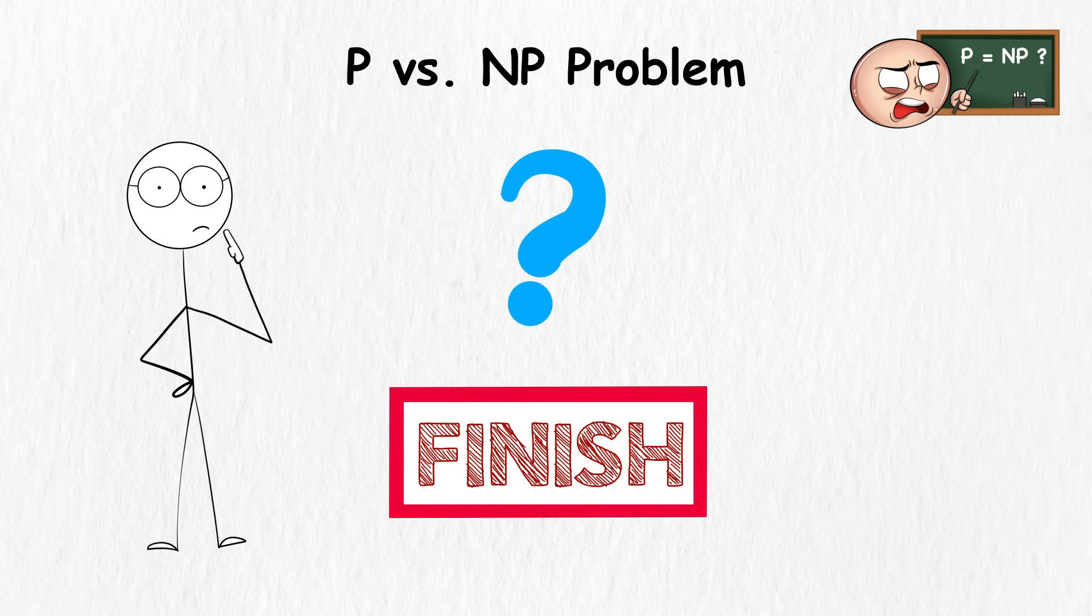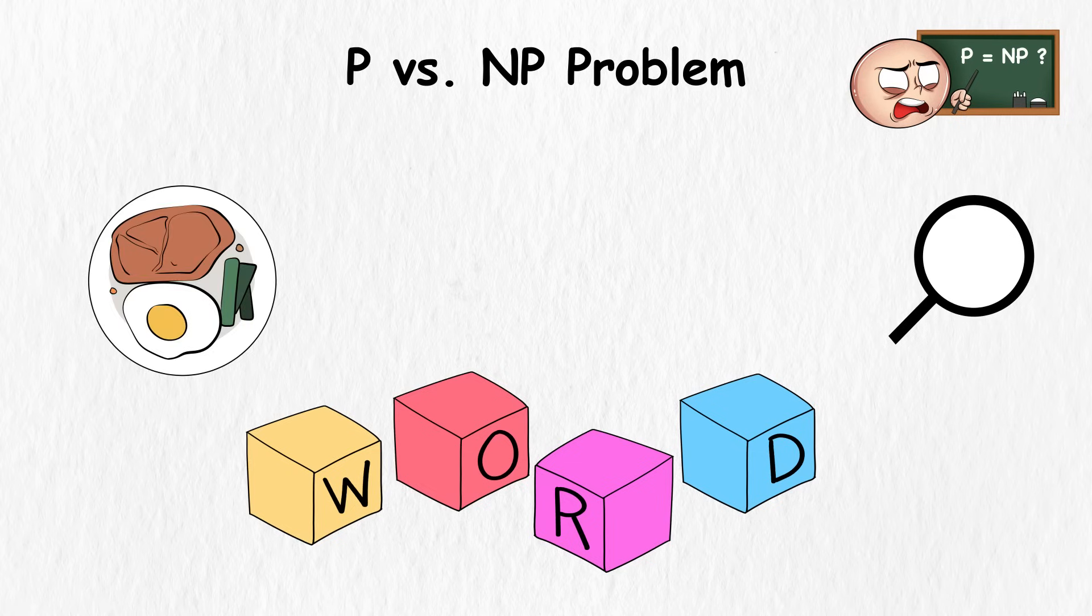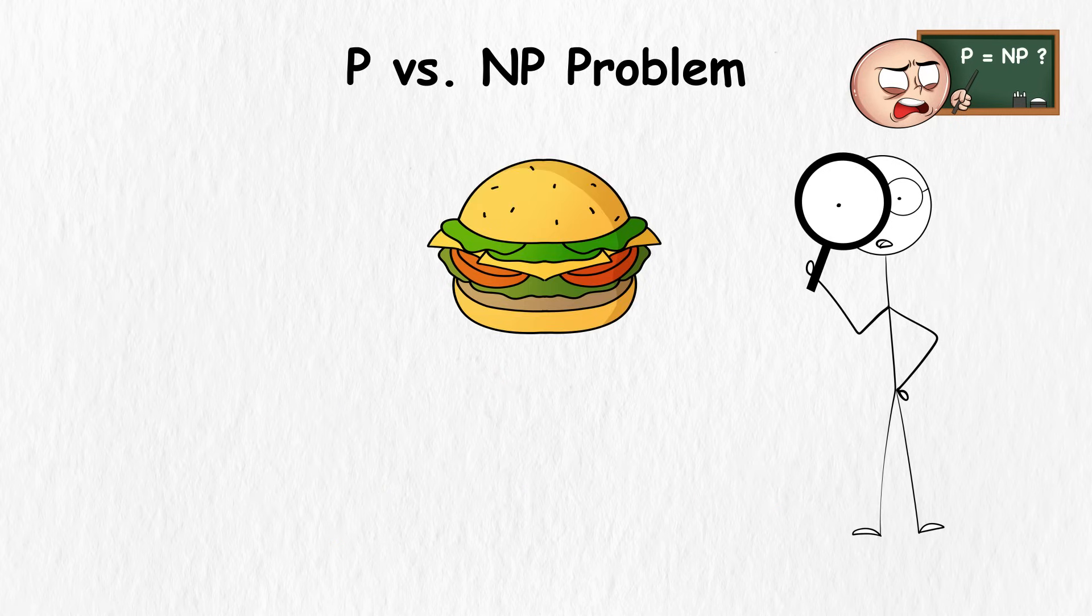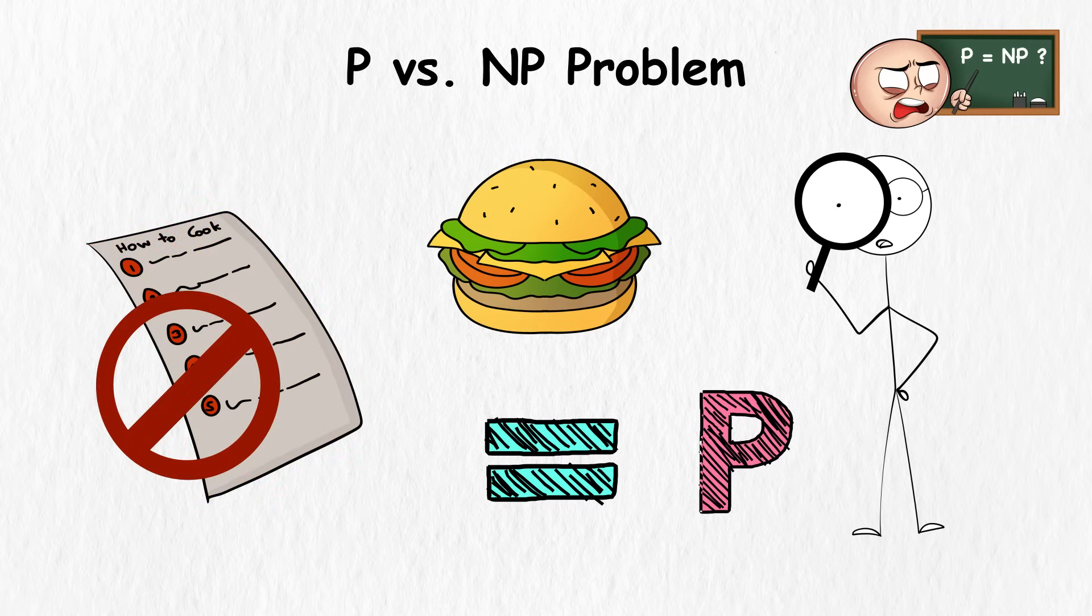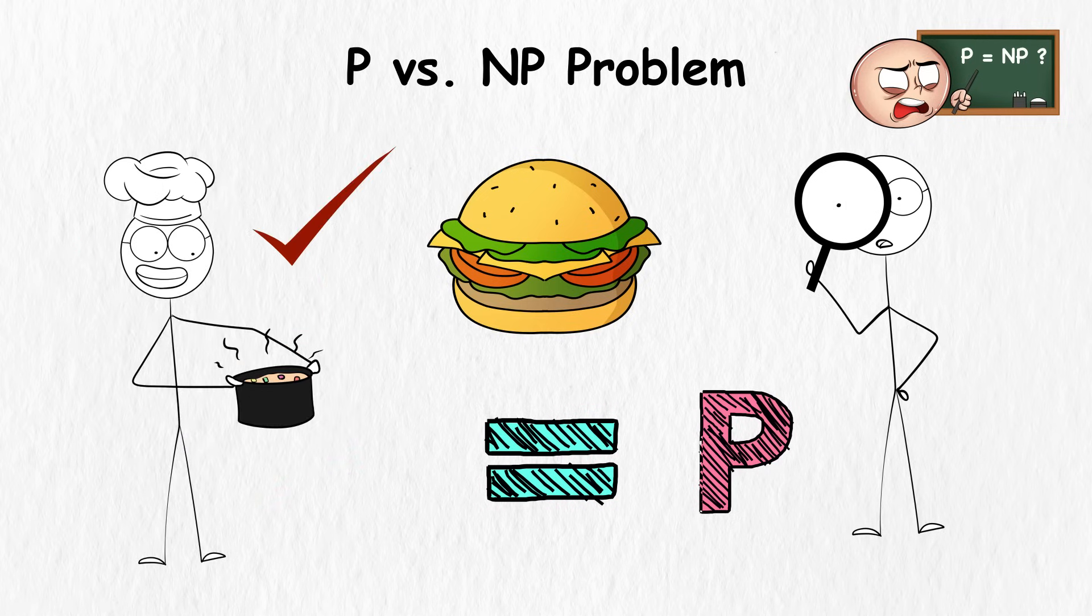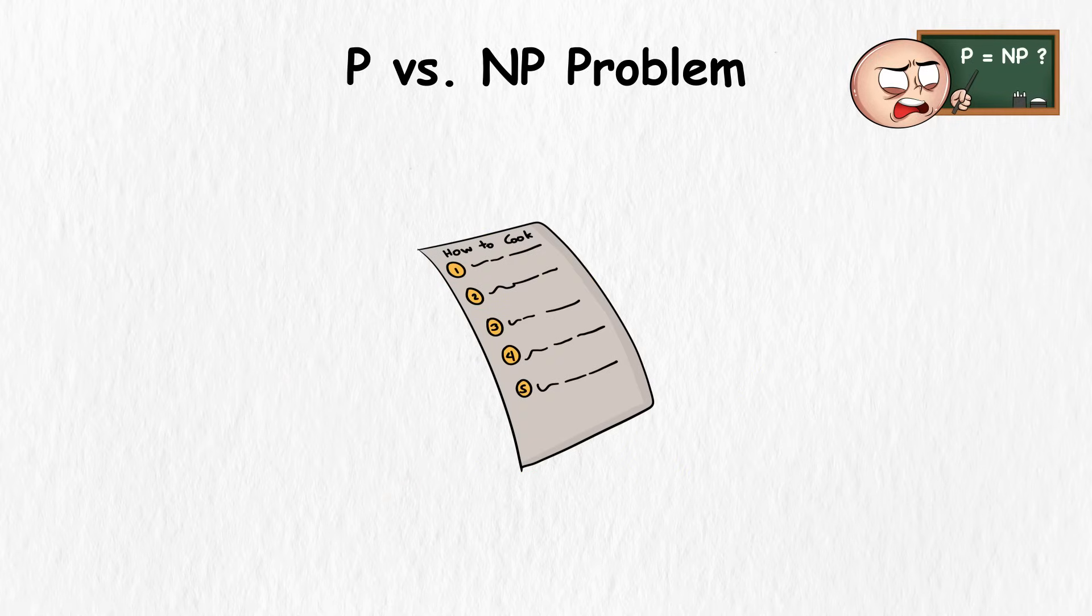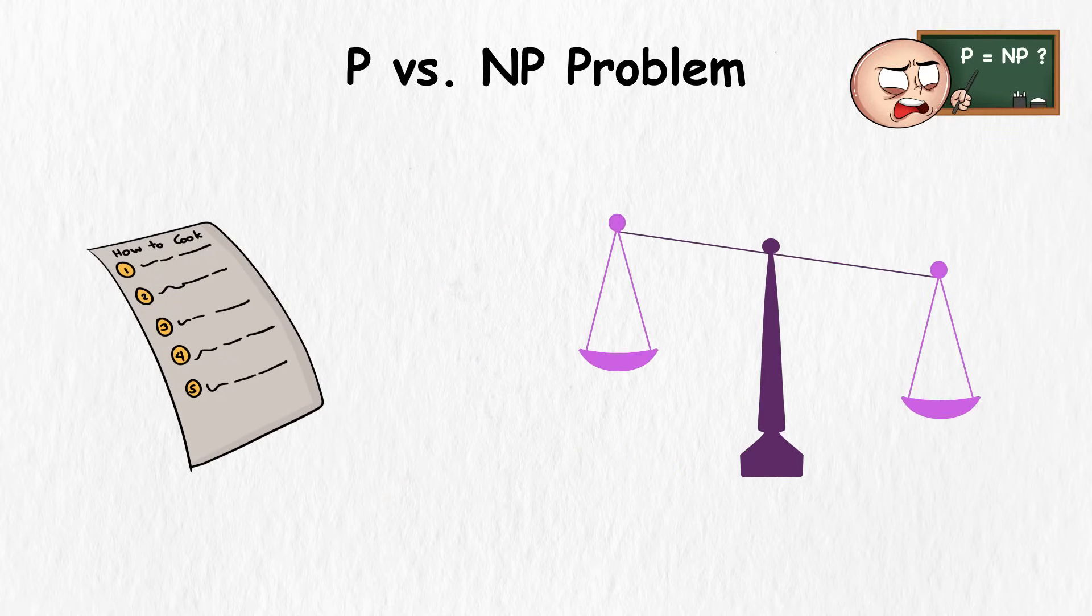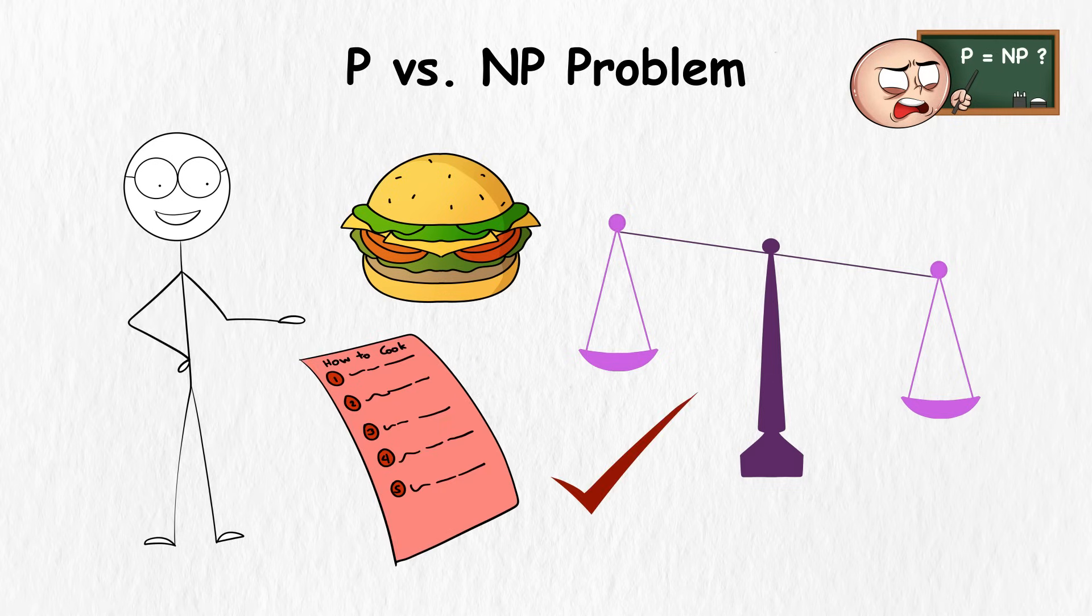Now the question is whether or not they're the same. In other words, if you can quickly check a dish, can you quickly cook it as well? Look at it this way. If you cook a burger following a recipe, that's basically P. If you don't have a recipe for a burger, but someone starts cooking it for you to make it easier for you to check and continue cooking it yourself, that's NP. But are the two burgers the same?